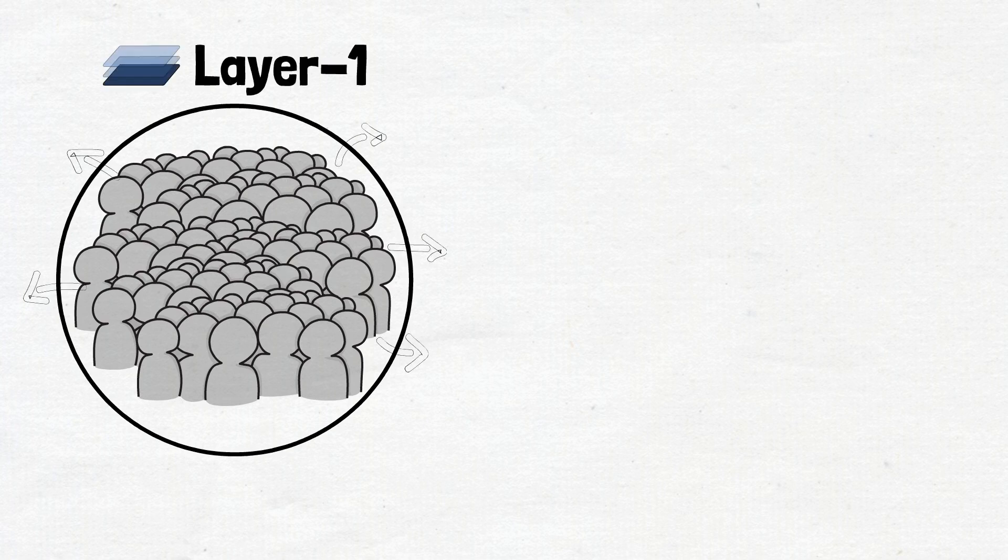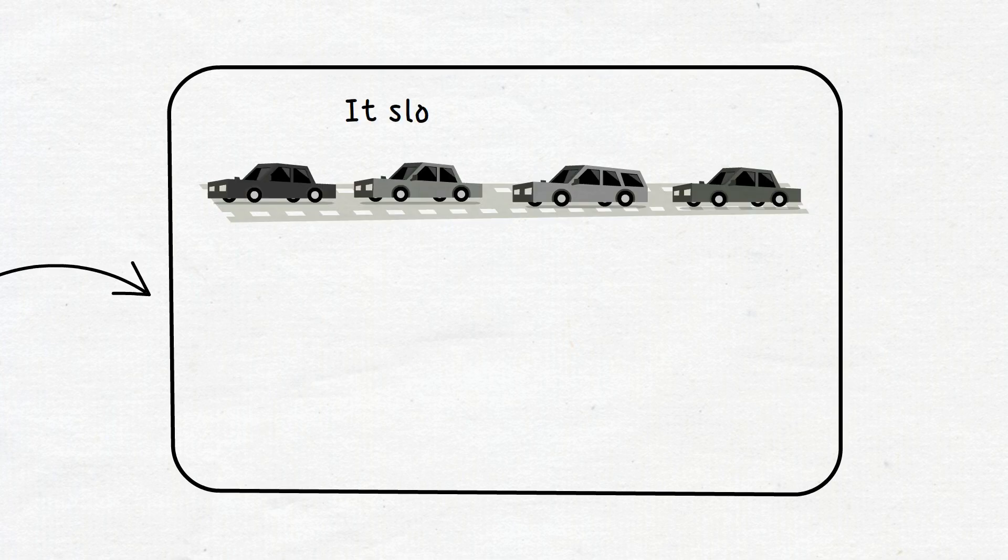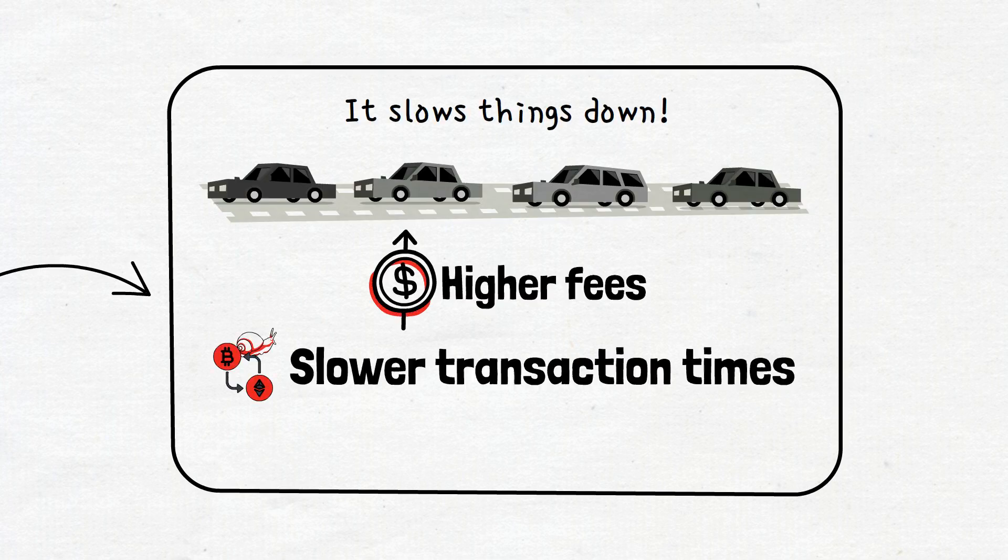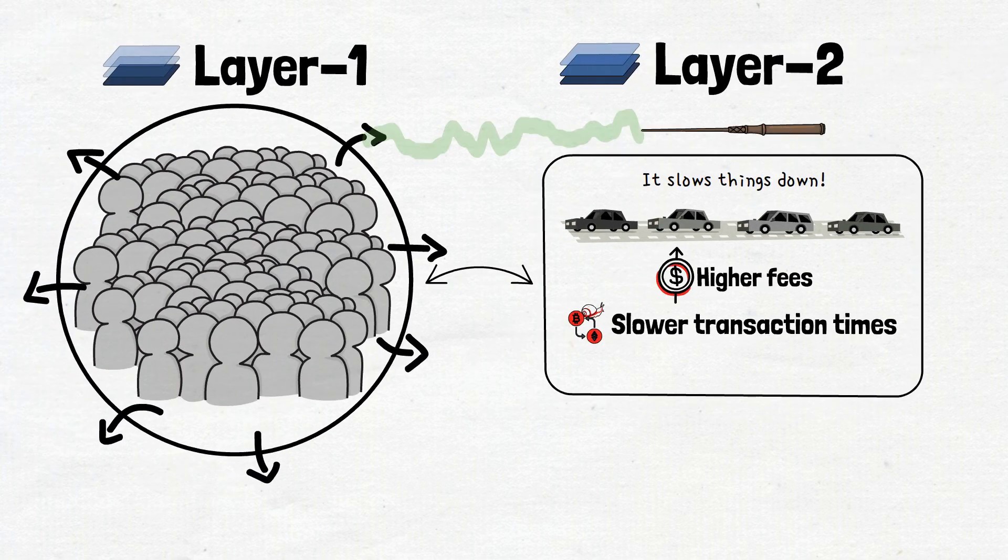But here's the kicker. As more people join the crypto ecosystem, Layer 1 sometimes gets a little overcrowded. Imagine rush hour traffic on a narrow road. It slows things down. This congestion leads to higher fees and slower transaction times. That's where Layer 2 enters the scene, waving its magic wand of scalability and efficiency.